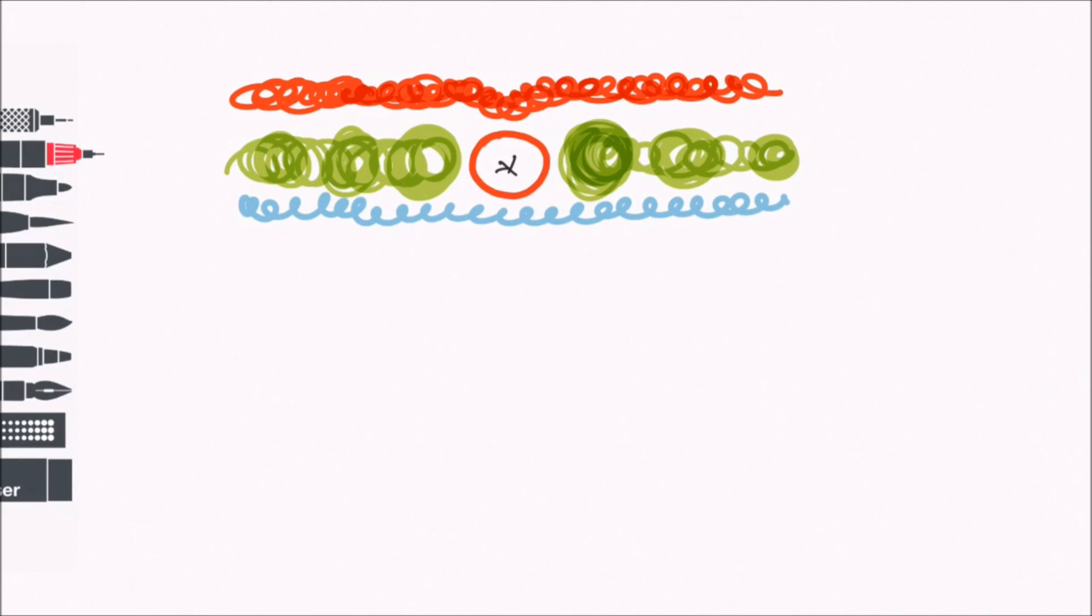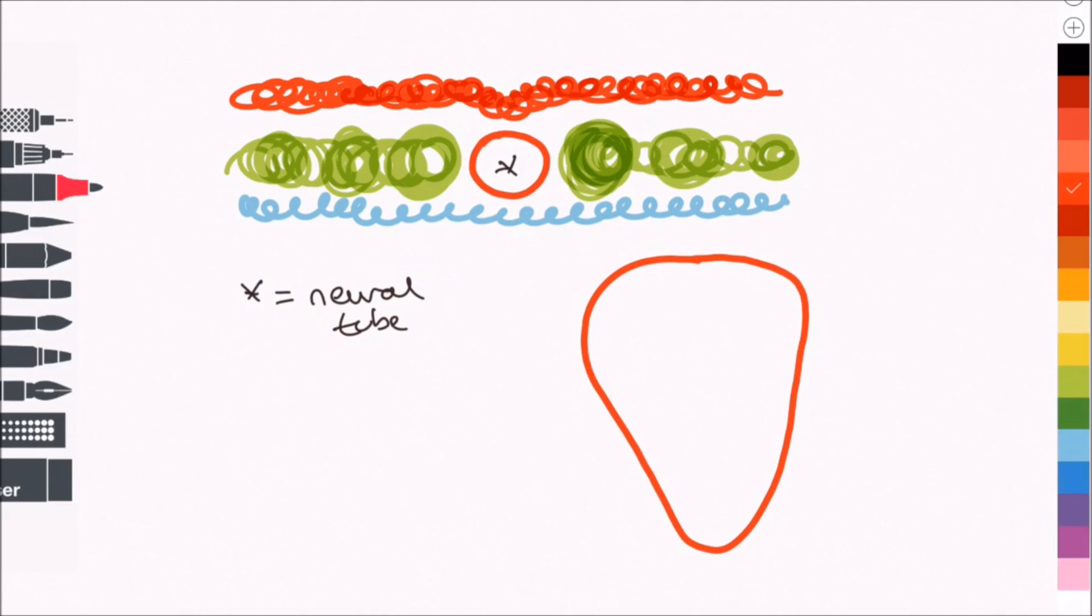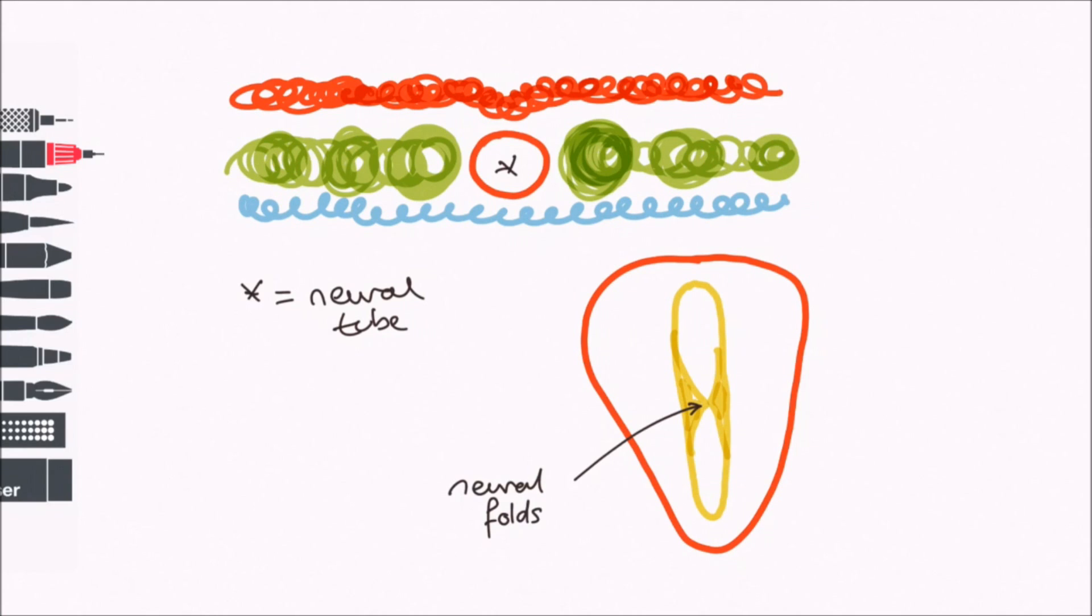The cells of the neural tube will become all the matter in the spinal cord. Let's go back to the bird's eye view. The neural folds merge first in the middle of the embryonic disc and then spread both cranially and caudally like a zip. If this process does not occur correctly, spina bifida will result, and there will be an entire video dedicated to this.